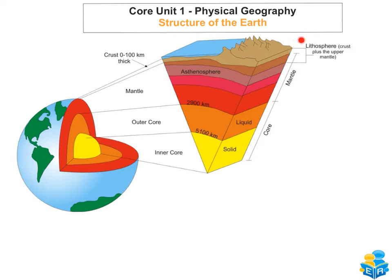Above that we have the lithosphere, which makes up the very top part of the mantle and the crust — the upper mantle and crust together form the lithosphere. The top layer itself is known as the crust, which is the Earth's outer skin. It's made up of solid rock, it's what we live on, and it's divided into oceanic crust and continental crust.